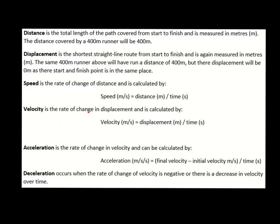Velocity is the rate of change in displacement, calculated by displacement divided by time. It's very similar to speed, but using the 400 metre runner example: their overall displacement would be 0, and if it took them 50 seconds to do one lap, you're left with 0 divided by 50 — useless information. So biomechanists break the 400 metre race into 50 metre intervals, giving a displacement of 50 metres divided by the time for those 50 metres. This allows you to see where your athlete had the highest and lowest velocity.